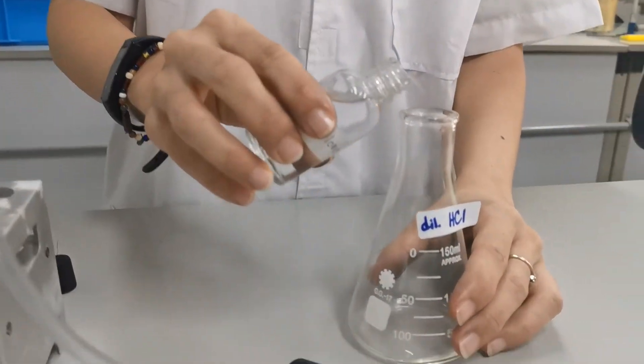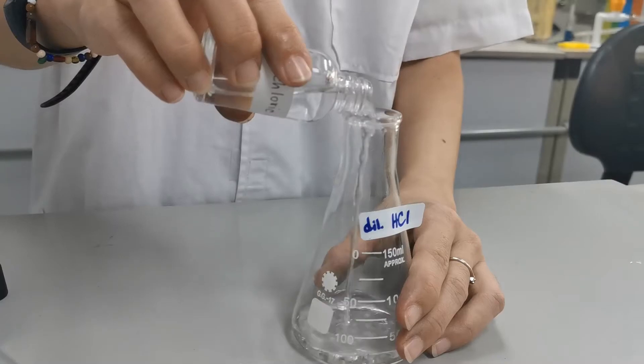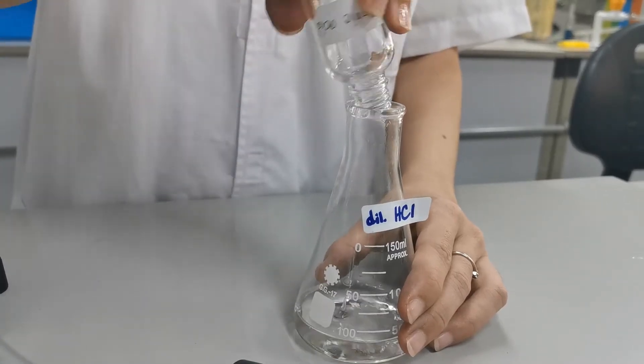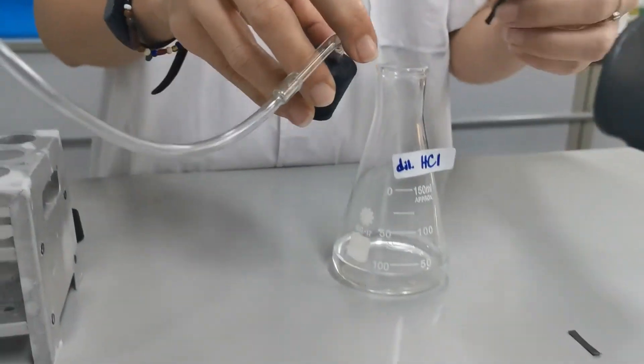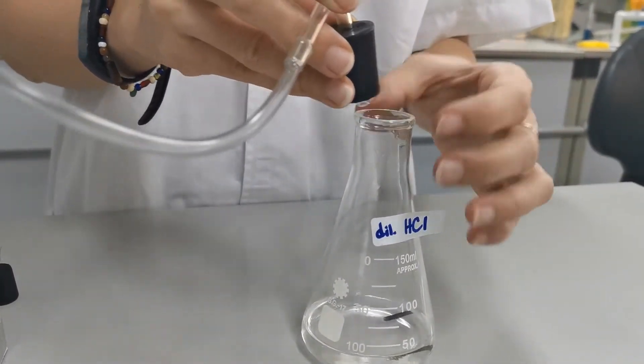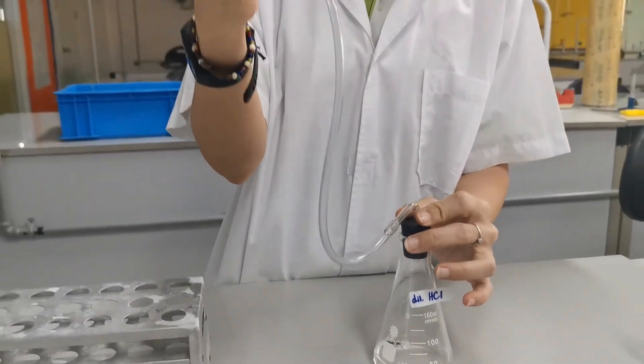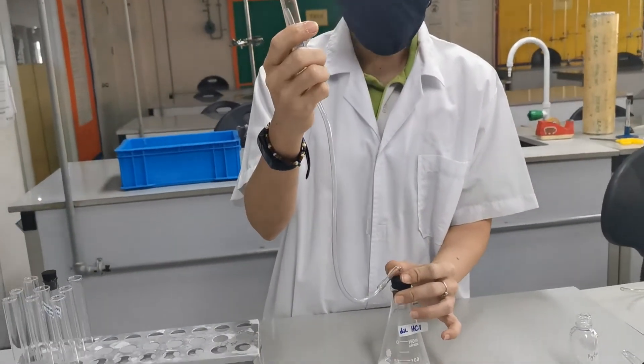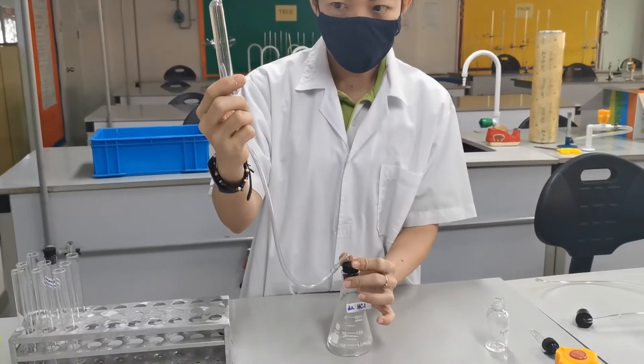I have here hydrochloric acid and then drop in a piece of magnesium ribbon and bring this upward like that. I'm hoping the hydrogen is going to collect in the test tube.